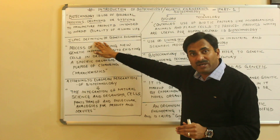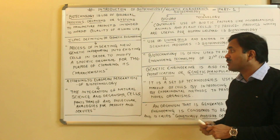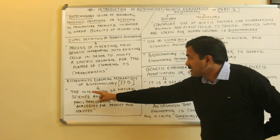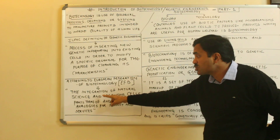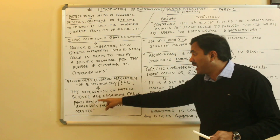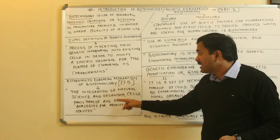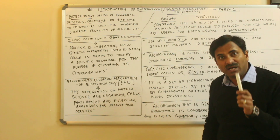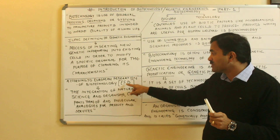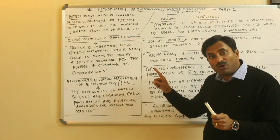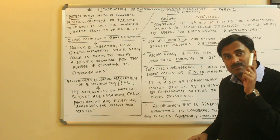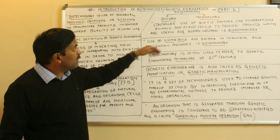According to the European Federation of Biotechnology (EFB), the definition of biotechnology is: the integration of natural science and organisms, cells, parts thereof — meaning their components — and molecular analogues for products and services. So according to EFB, the integration of natural science and organisms, cells, parts thereof, and molecular analogues for products and services is called biotechnology.